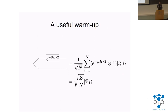A useful warm-up is the thermal state itself. We can obtain the purification of the thermal state at inverse temperature beta with respect to Hamiltonian H by acting with the operator e^{-βH/2} on the maximally entangled state. This is our target state — the purification of the thermal state — but importantly we get a pre-factor.